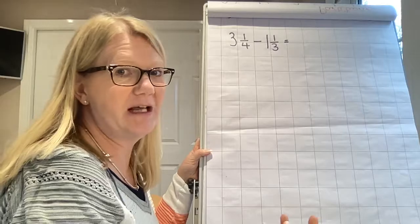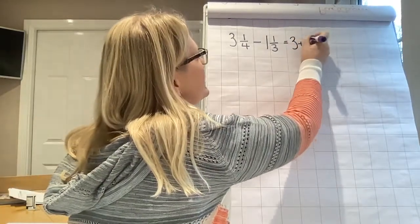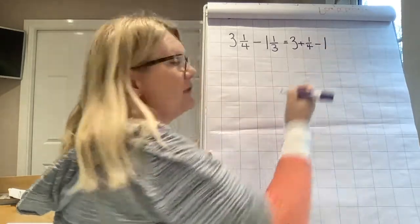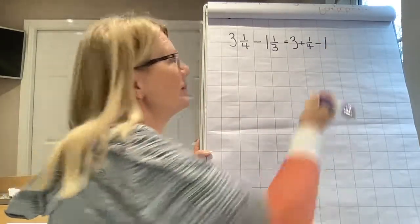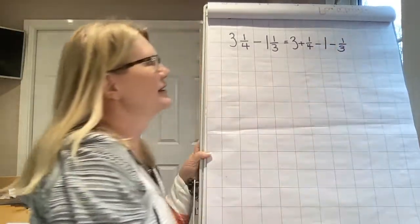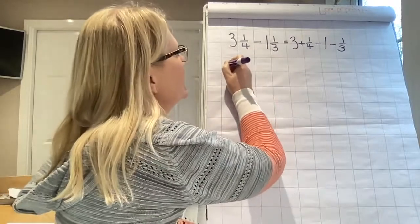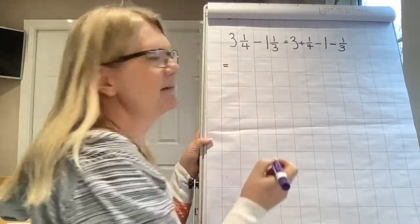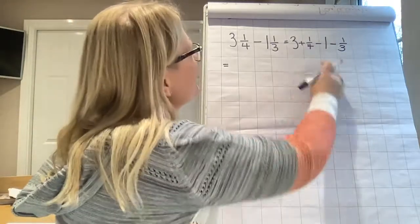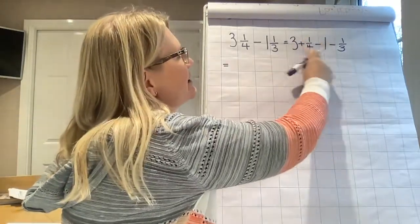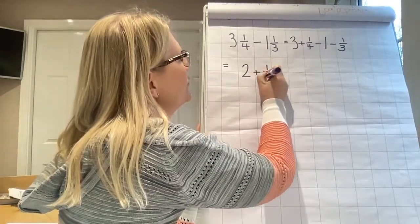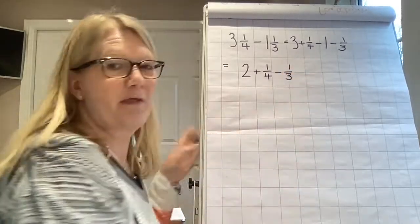So three plus one quarter minus one and remembering we're taking away both parts of the mixed number, so minus one third. That's our partitioning step. Next step, who can remember what it is? It's reordering. So I'm going to group my integers and I can see three minus one is two plus one quarter minus one third.